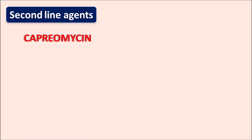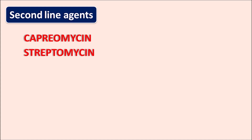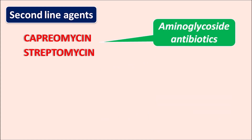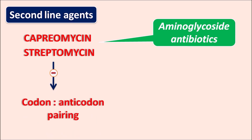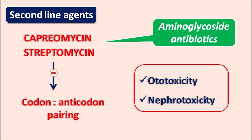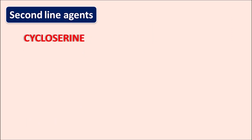Now let us look at the second line agents. An important second line agent is capreomycin, and another drug is streptomycin. Both capreomycin and streptomycin are aminoglycoside antibiotics. These drugs inhibit codon-anticodon pairing within the mycobacteria, thereby inhibiting protein synthesis. Since these drugs belong to the aminoglycoside category, they produce two important side effects: ototoxicity and nephrotoxicity.